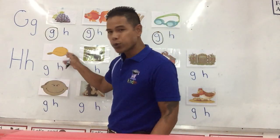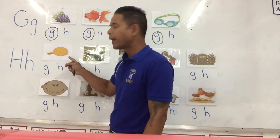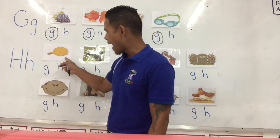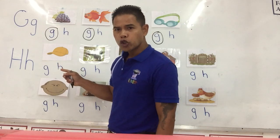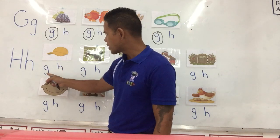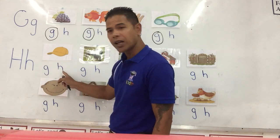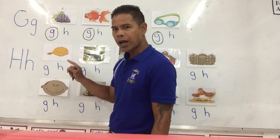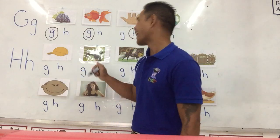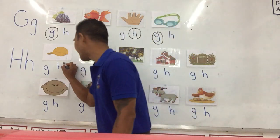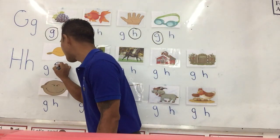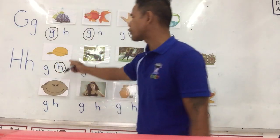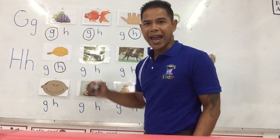Next one — hat. Hat. Which one? Is it letter G or letter H? Huh. Hat. Excellent. We circle the letter H for hat.